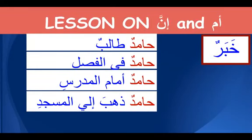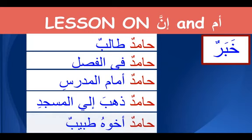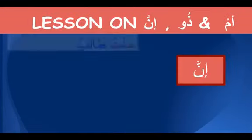And Hamidun zahaba ilal masjidi — here zahaba ilal masjidi is a jumlatul fi'liya coming as a khabar for Hamidun. The last type of khabar is a jumlatul ismiya, where it is itself a mubtada and khabar. For example, Hamidun akhuhu tabibun — his brother is a doctor. These are the types of khabar which remain khabar when Inna enters.